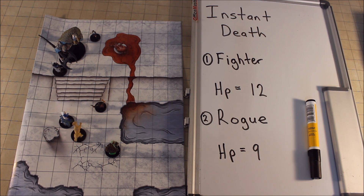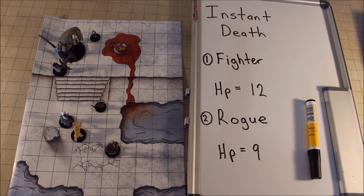So how do we figure out if you are instantly killed or suffer instant death? Massive damage can kill you instantly. To determine this, when damage reduces you to zero hit points and there is damage left over or remaining, you die if the remaining damage equals or exceeds your hit point maximum.